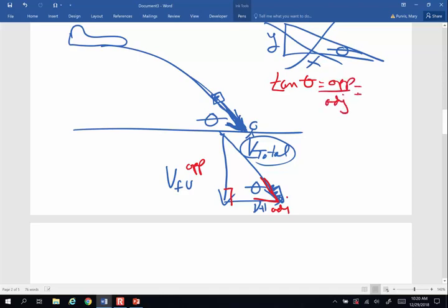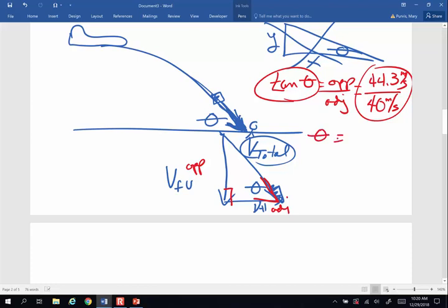My opposite side is my final vertical velocity, which we found above was 44.3 meters per second. My adjacent or horizontal velocity was 40 meters per second. So when I do the math and then hit inverse tangent or second tangent, theta ends up being 48 degrees.